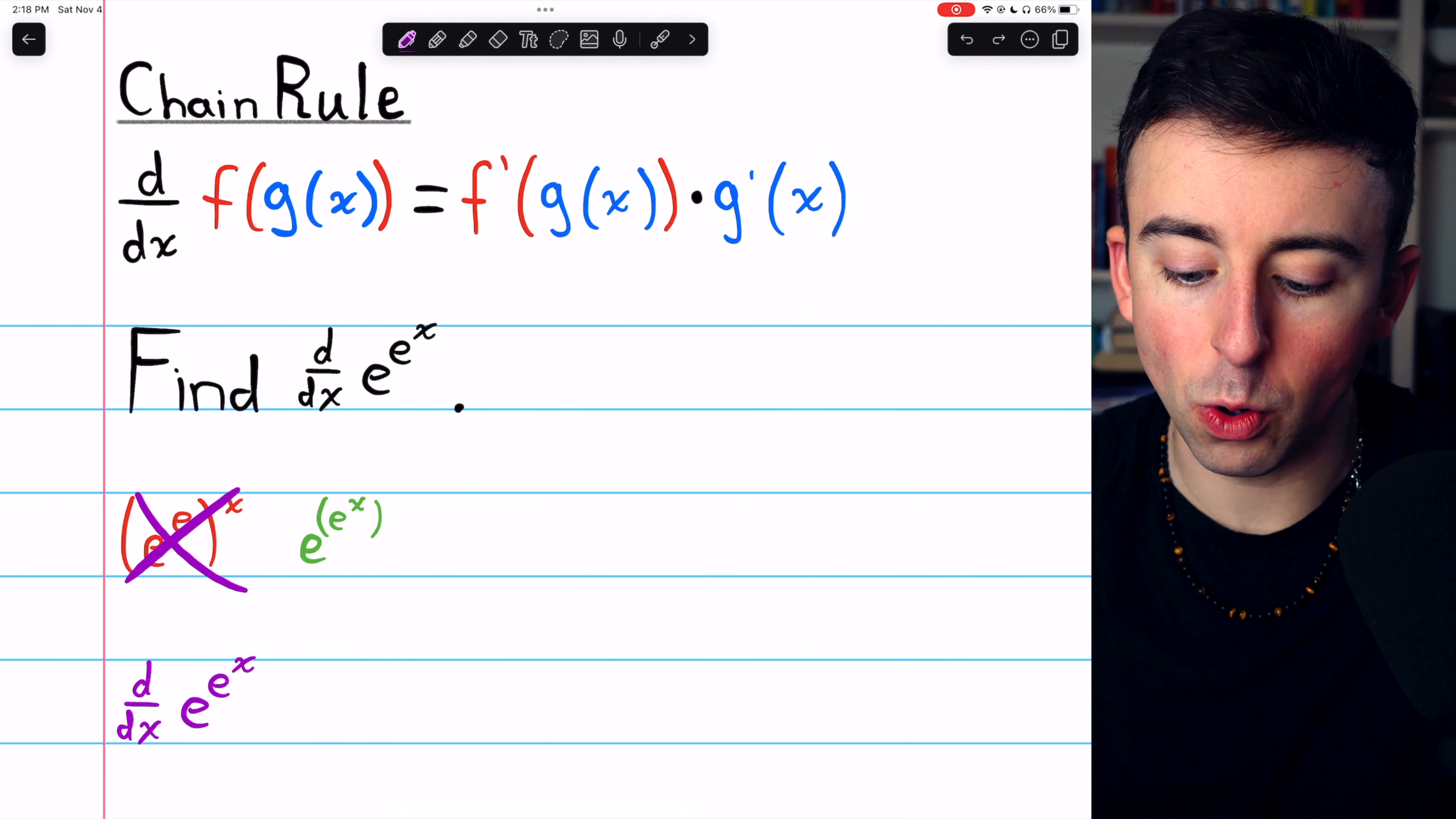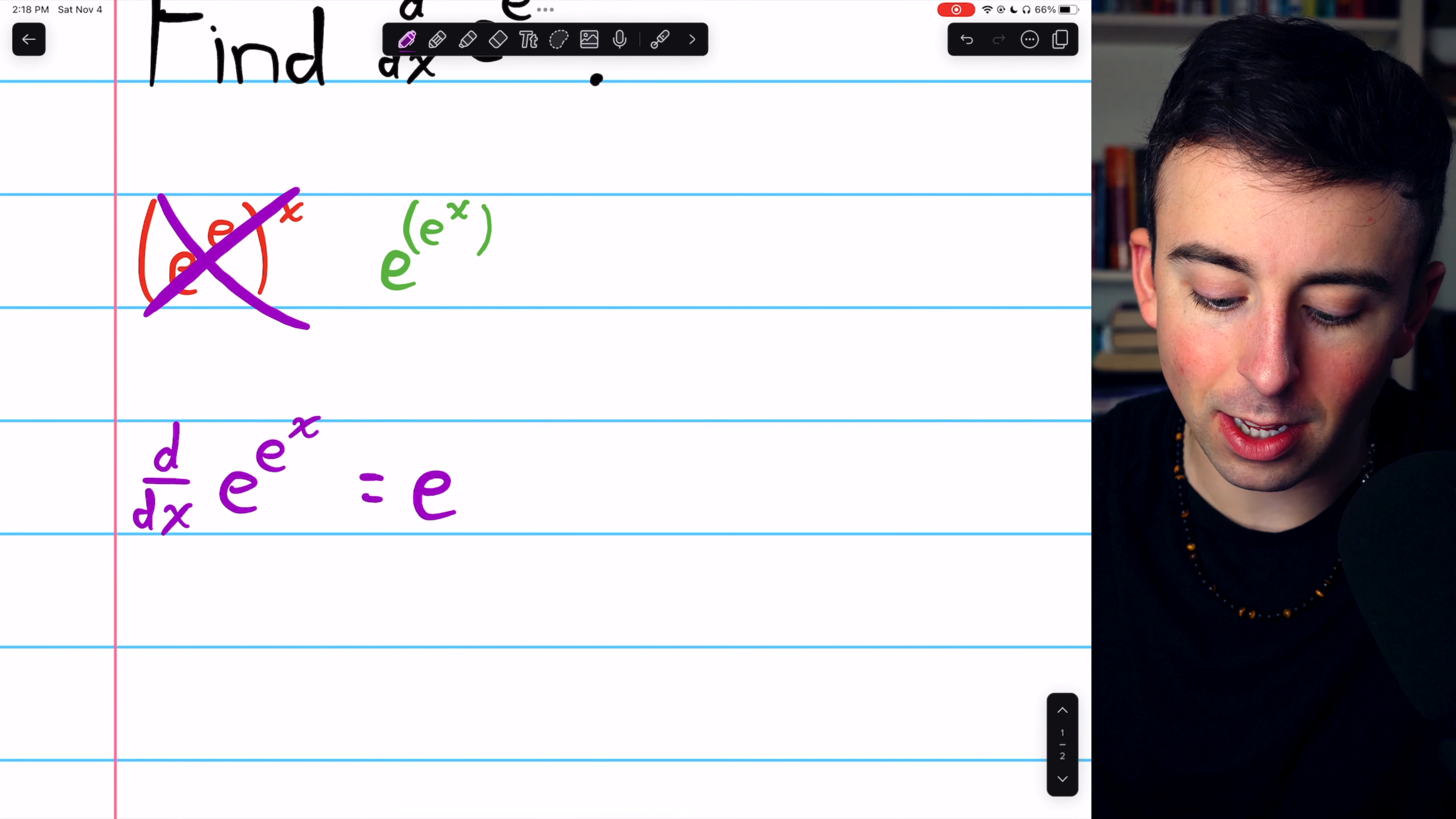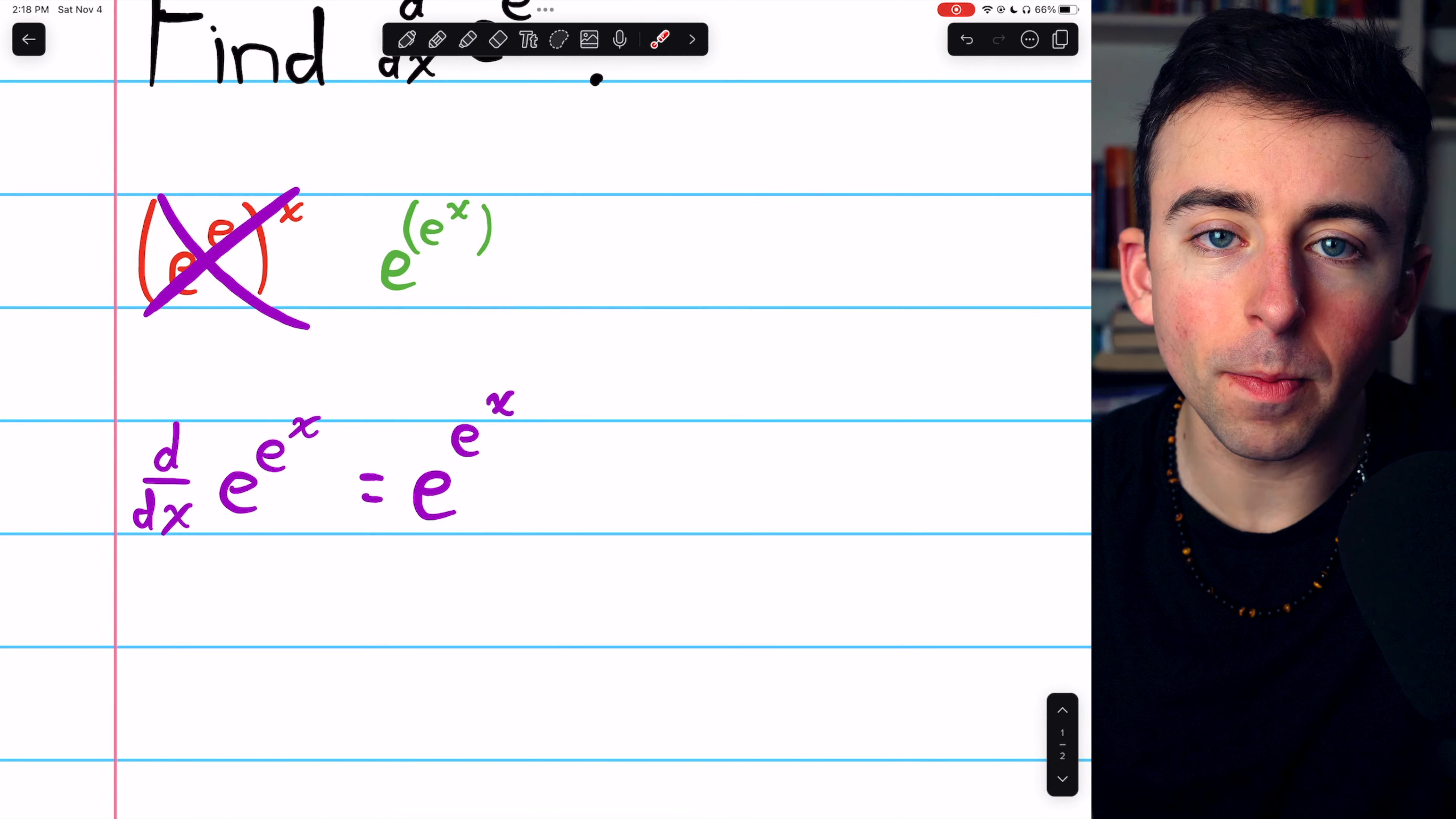In this case, the outside function is e to a power, and so the derivative of that is just e to that power. In this case, that power is the inside function, e to the x.